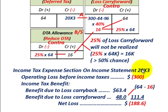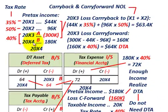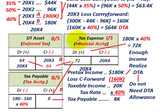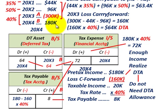Now let's look at year 20x4, where we're going to be carrying forward our remaining loss amount. For year 20x4, we're going to have pre-tax income of $180,000. We're going to have our deferred tax asset that we'll be able to use up, and then a tax payable for the current amount of taxes due in 20x4. Looking at our tax expense: $180,000 of pre-tax income times the 40% tax rate gives us $72,000 in tax expense on our income statement for year 20x4.